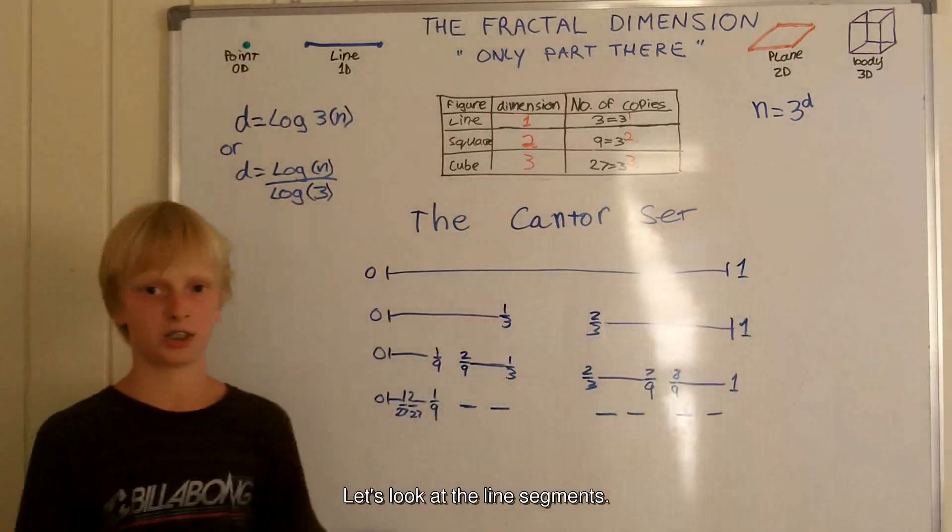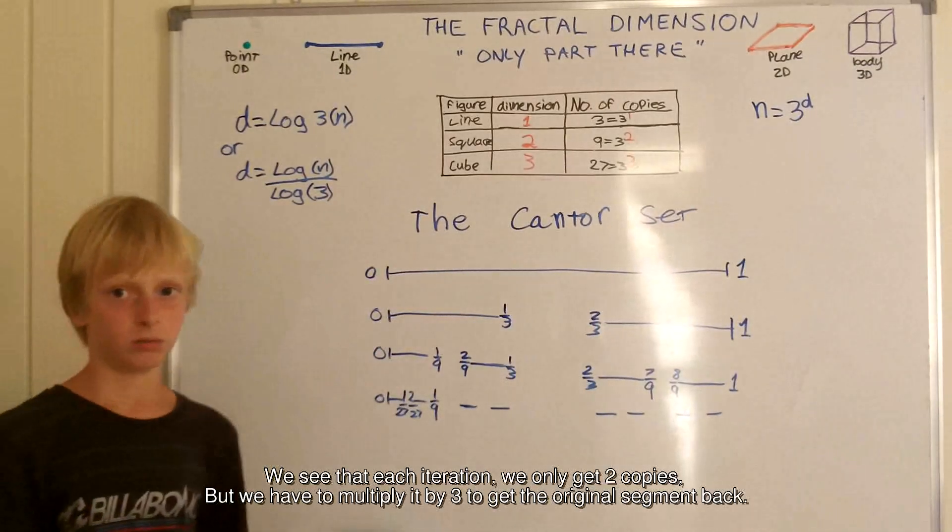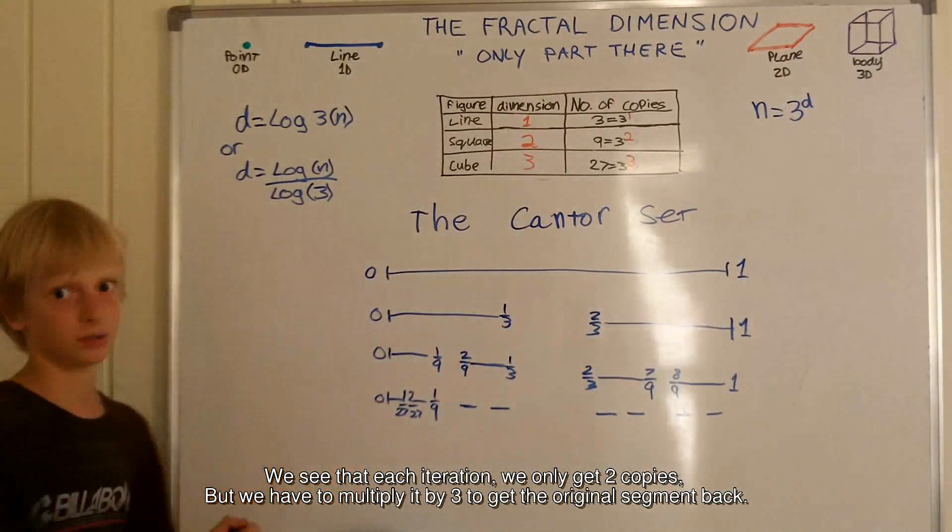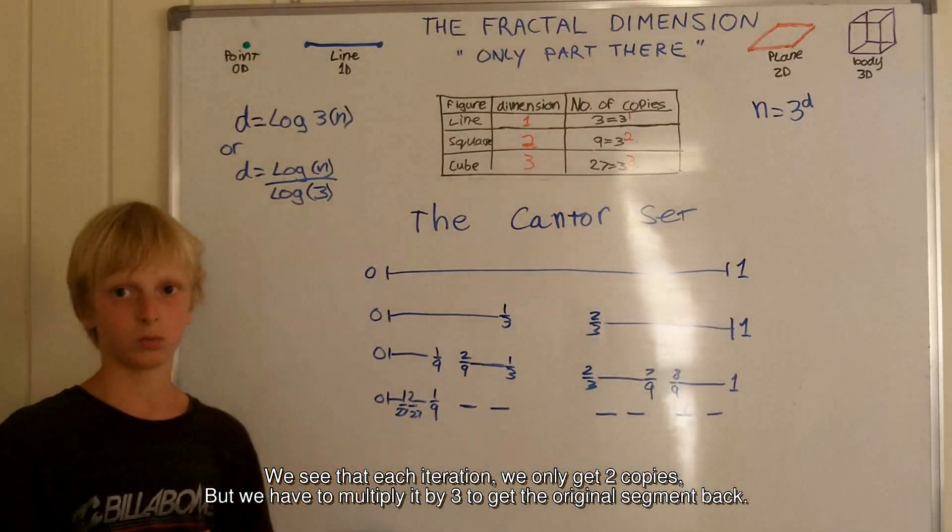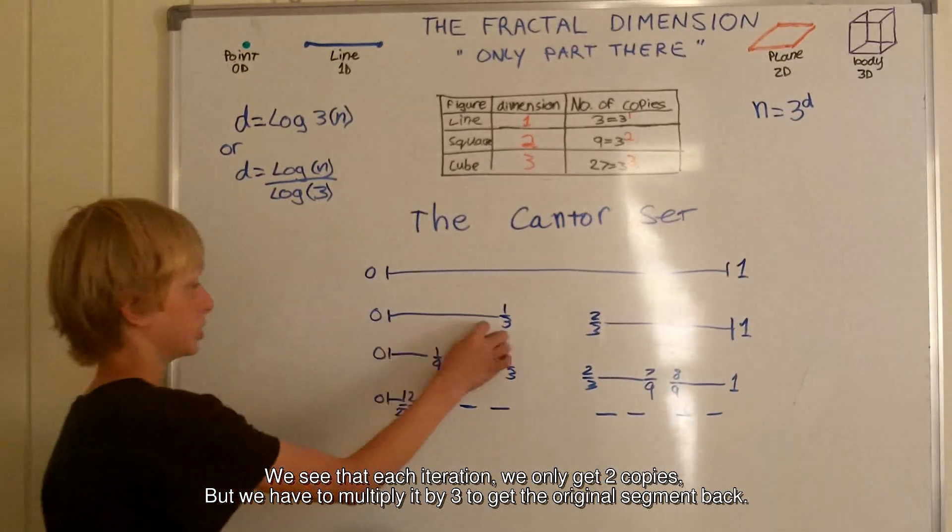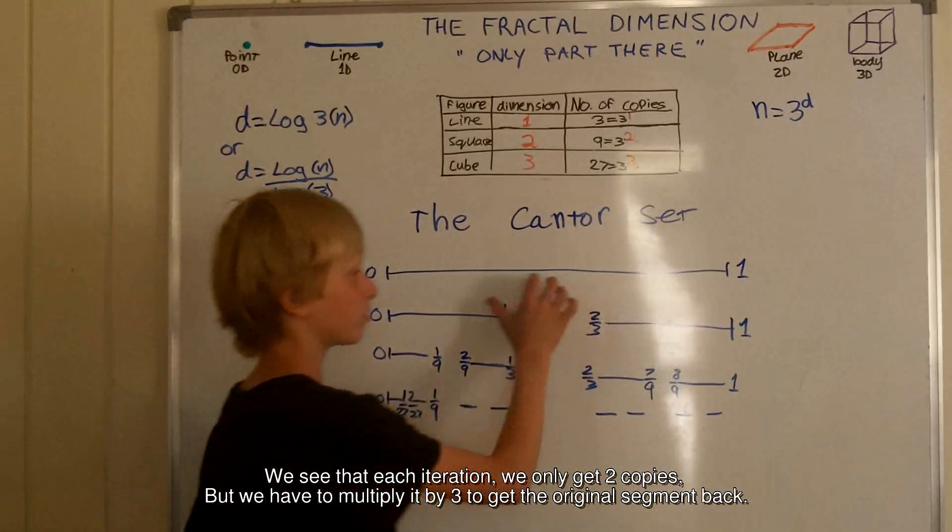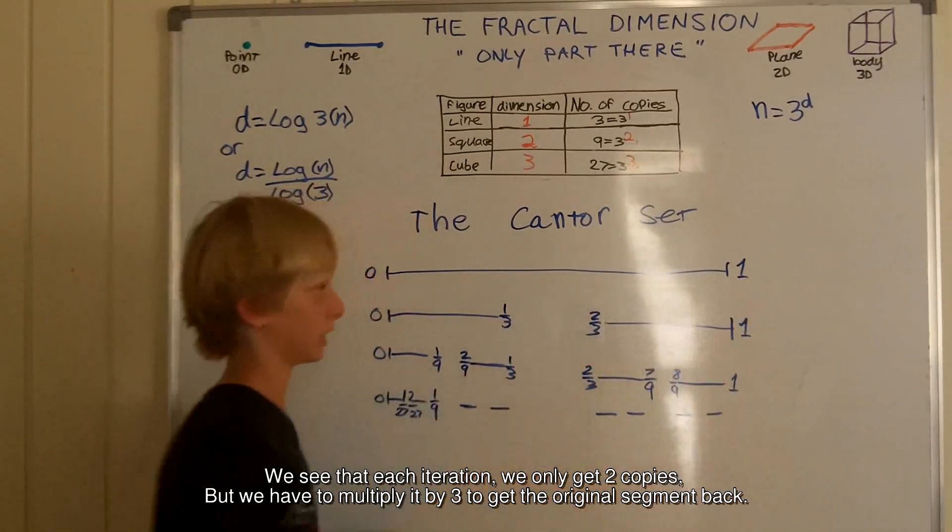Let's look at the line segments. We see that each iteration, we get 2 self-similar copies. But we have to multiply it by 3 to get the original segment back.